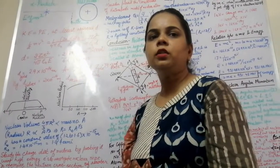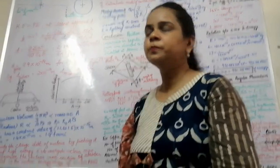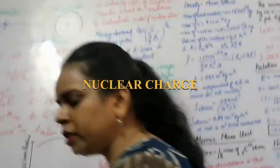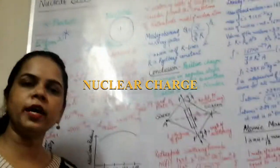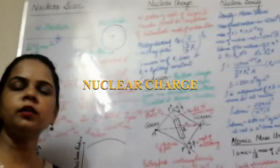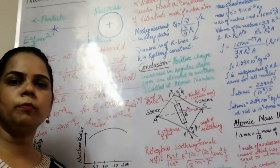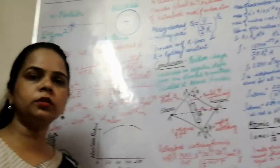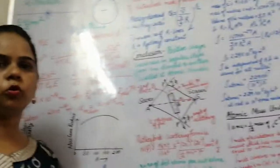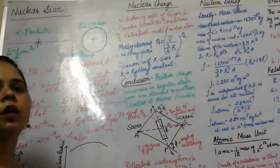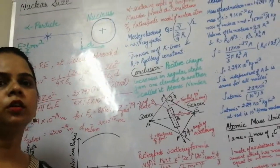The next property is nuclear charge. The nucleus consists of protons and neutrons; neutrons are neutral and protons carry positive charge. So the main charge on the nucleus is only due to the protons. The number of protons present in the nucleus determines the charge on the nucleus.